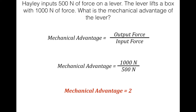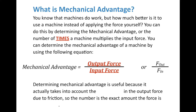Sometimes mechanical advantage can be less than one, meaning the output is less than the input, but the force acts over a greater distance — and force times distance is work. Sometimes the mechanical advantage equals one, like in the case of pulleys. Mechanical advantage is useful because it accounts for the reduction in output force due to friction. Haley's lever gives twice the output compared to the input due to the multiplication of force.